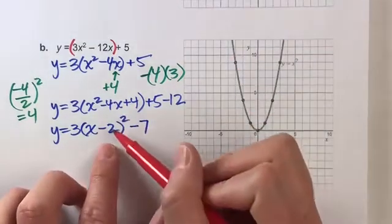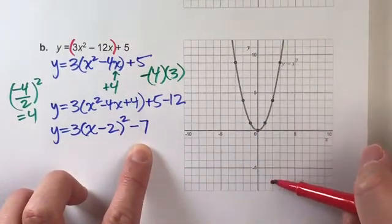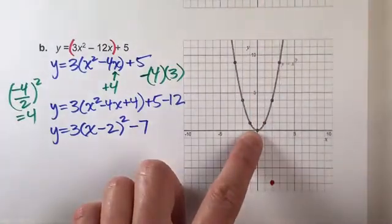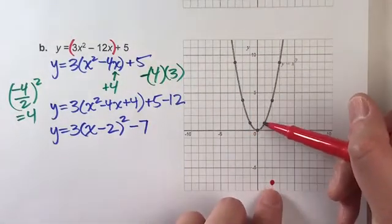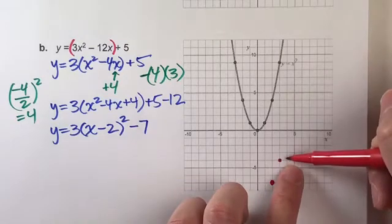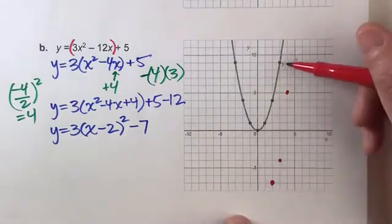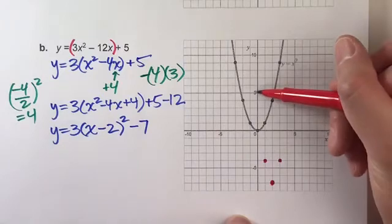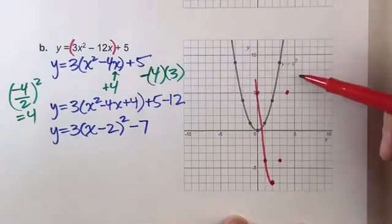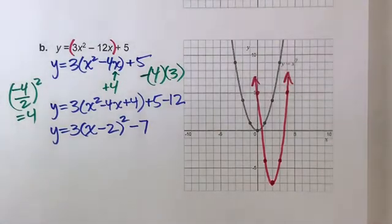So I know my vertex is going to be shifted right 2 and down 7. Right 2, down 7. And it has a vertical stretch of 3, which means all these points are going to be 3 times as high. So instead of the next one being up 1, the next one's going to be up 3. And then after that, the next one's up 3, so I'm going to multiply that by 3. So this next one's going to be up 9. So you can already tell this is going to be a very stretched out parabola. I'm going to repeat it on the other side because it's symmetrical. And I'll do my best to sketch it in, but it's kind of hard to sketch in these super tall ones. There's the sketch of my parabola.